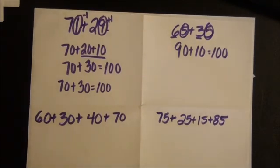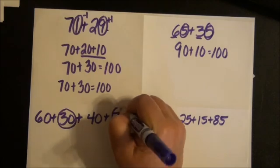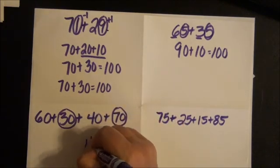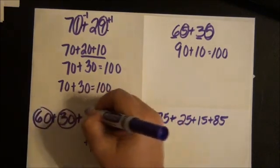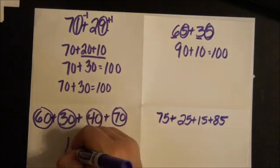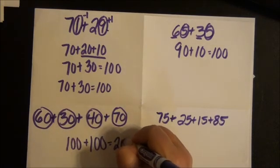Here I can just make hundreds. 30 plus 70 is 100, 60 plus 40 is 100, 100 plus 100 equals 200.